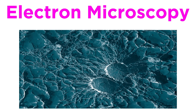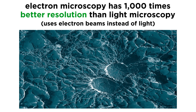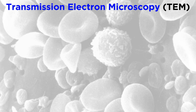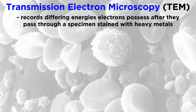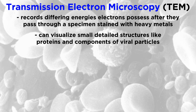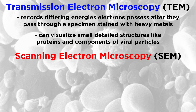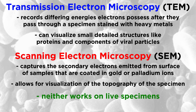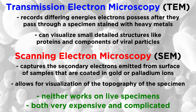We covered quite a lot in this tutorial, so let's briefly summarize. Electron microscopy has around 1,000 times better resolution than light microscopy, because electron microscopy uses electron beams instead of light, which have a shorter wavelength. This allows some electron microscopes to visualize specimens at 1,000,000 times their original size. Transmission electron microscopy, or TEM, records the differing energies that electrons possess after they pass through a specimen stained with heavy metals to visualize small detailed structures, like proteins inside of cells and molecules associated with viral particles. Scanning electron microscopy, or SEM, captures the secondary electrons emitted from the surface of samples coated in vaporized gold or palladium ions to visualize the topography of the specimen. The main drawback is that both SEM and TEM cannot be used to visualize living specimens, and they are also quite expensive and complicated techniques to use.